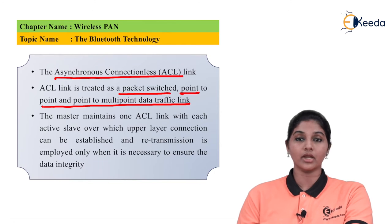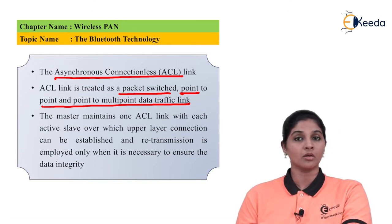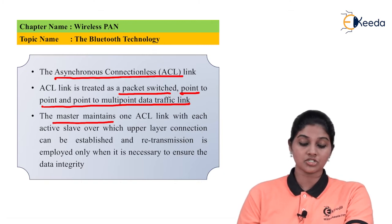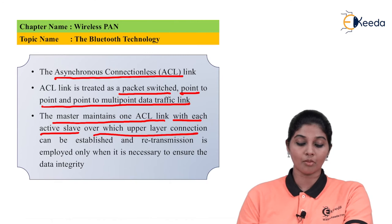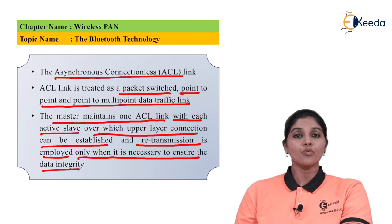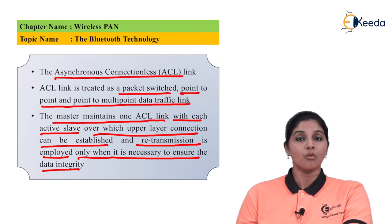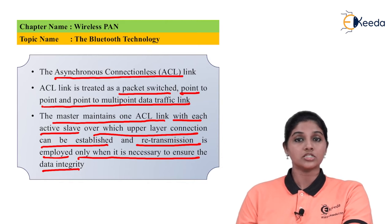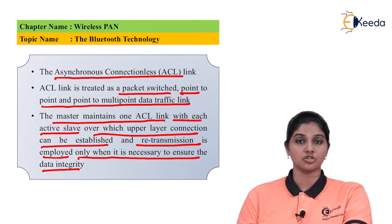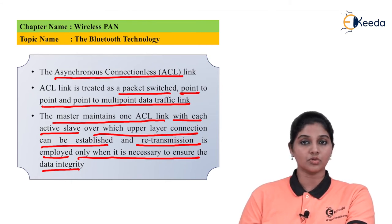The ACL link is used for packet-switched point-to-point and point-to-multipoint data traffic. While SCO is only point-to-point, ACL supports both point-to-point and point-to-multipoint data transfer. The master maintains one ACL link with each active slave, over which upper-layer connections can be established. Retransmission is employed in ACL only when necessary to ensure data integrity — if data is altered or corrupted during transmission, retransmission takes place.